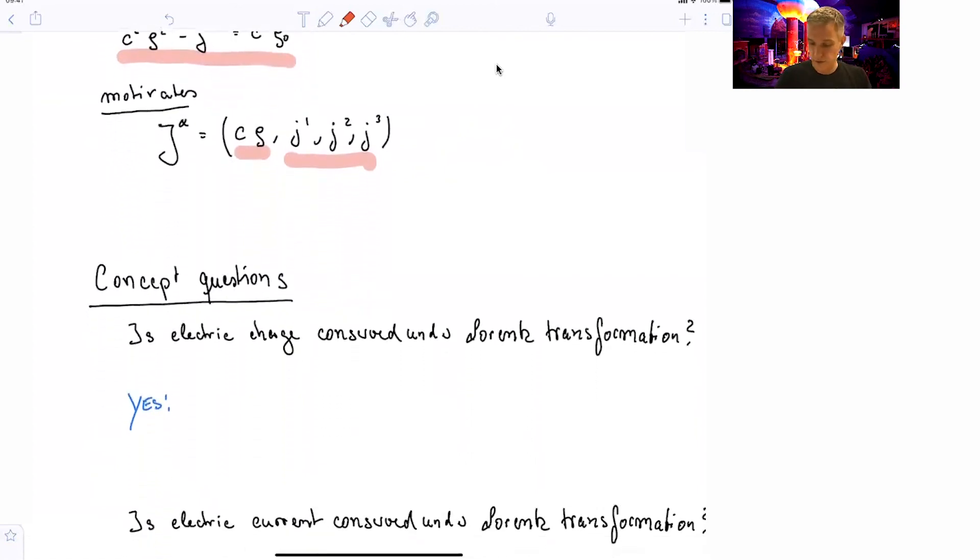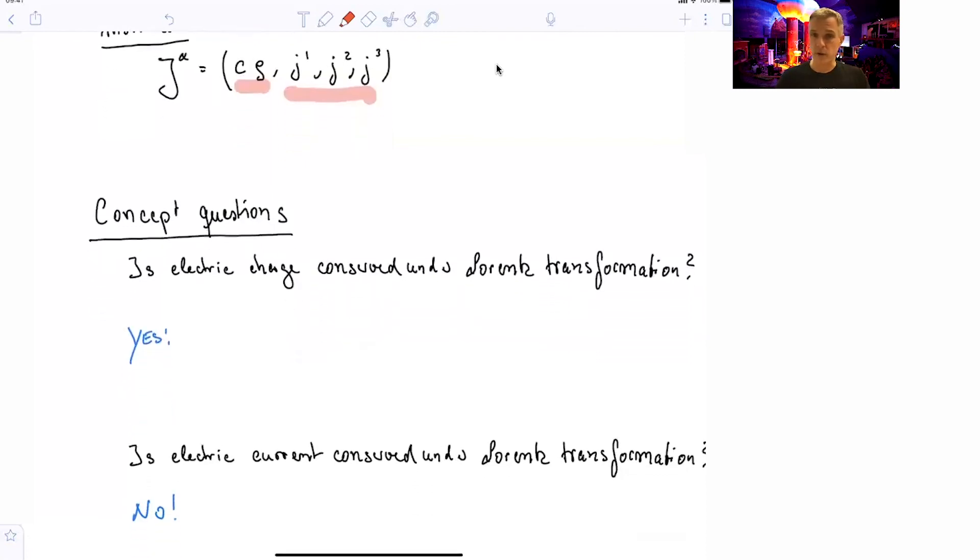Is the electric current conserved under the Lorentz transformation? Or invariant under the Lorentz transformation? We should rather use invariant. And the answer is no, it's not. So we have seen from the very first example that we start with the current 0, and then in the s prime frame, the current is of a certain value. So certainly, the current is different as seen from two different observers.